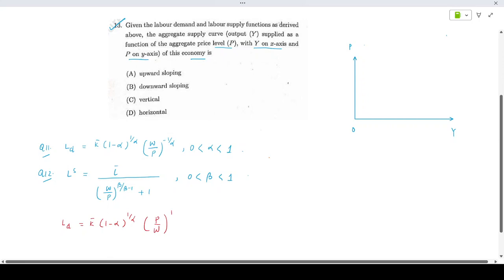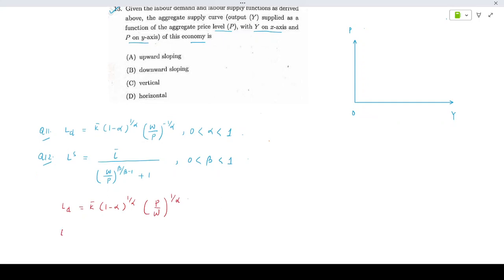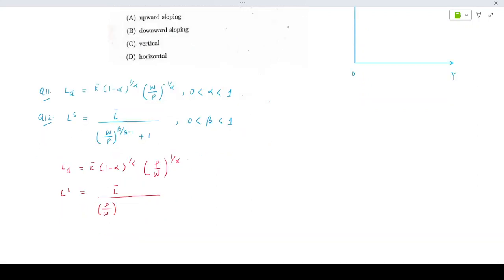The labor supply curve can be written as l bar divided by [(p/w)^(beta/(1-beta)) + 1]. If you look at the labor demand curve now, if the nominal wage increases, then (p/w)^(1/alpha) will fall.